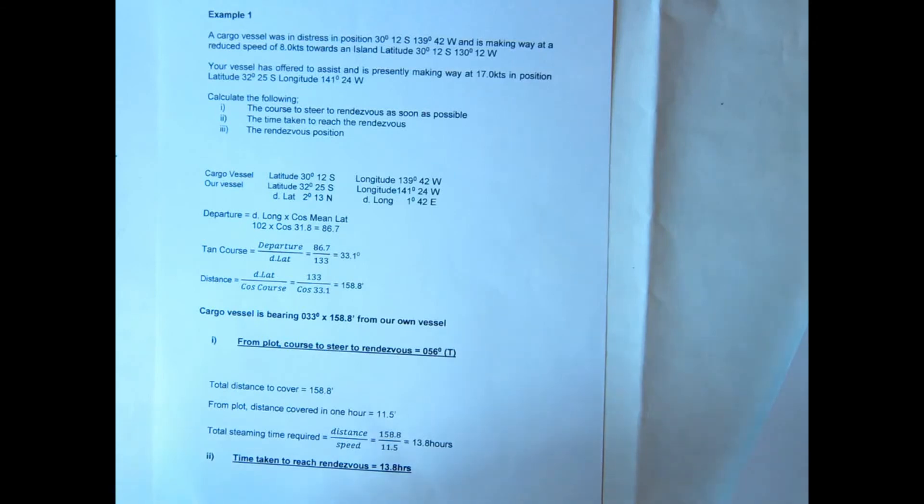So what we have to do first is work out the bearing and distance between ourselves and the cargo vessel. So you can either do this per cater or plain sailing, and calculate that our bearing is 033 and 158.8 miles from our vessel.